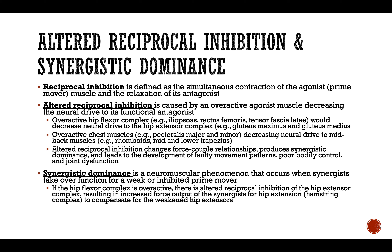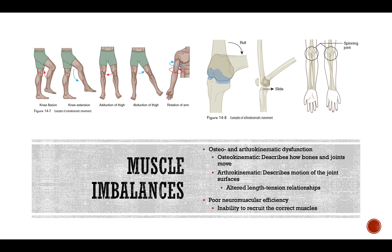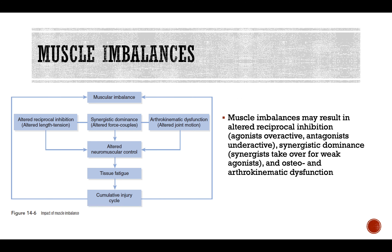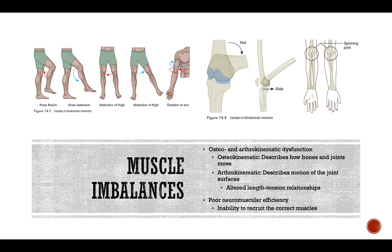Synergistic dominance is where the synergists become the main functioning muscles. The nervous system, unable to move the prime mover correctly, inhibits those prime movers and compensates by making the synergist more active. Arthrokinematic dysfunction refers to dysfunction of joint motion — the motion of the joint surface. Osteokinematic describes how bones and joints move; arthrokinematic describes motion of the joint surface itself.